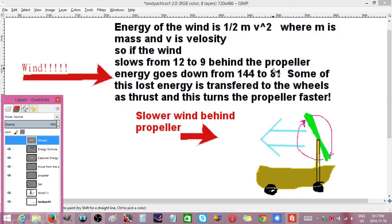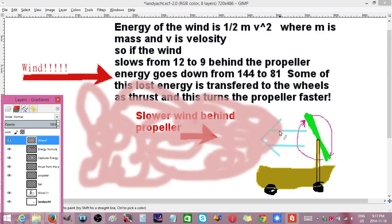These are just arbitrary units, but it's gone down a lot. Some of this lost energy is transferred to the wheels from the thrust - equal and opposite reactions - so that means the wheels spin a little faster and so does the propeller. And so where's the energy coming from?